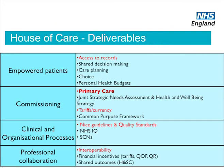My role is not to tell CCGs, social care, or health and well-being boards what to do, but to help create insight, understanding and influence across the system and generate the right inputs to deliver the right impact for people with long-term conditions. The things we've been doing — access to records, shared decision-making, care planning, choice, personal health budgets — put together, that's about empowering patients. Using health and well-being boards, strategy, tariffs, currency, the common purpose framework, and integrated care pilots — all through commissioning — to help build the house of care.